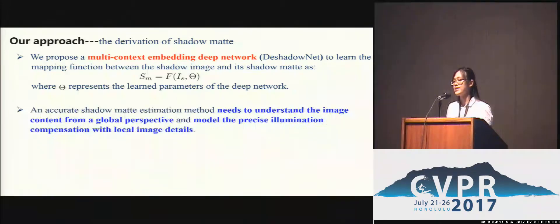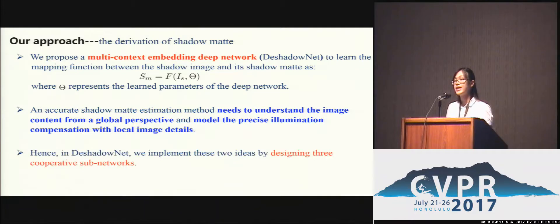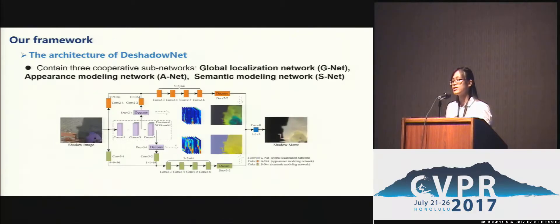Our idea is that an accurate shadow matte estimation method needs to understand the image content from a global scale and model precise illumination compensation with local image details. Hence, in DeshadowNet, we implement these two ideas by designing three cooperative sub-networks: the global localization network, the appearance modeling network, and the semantic modeling network.